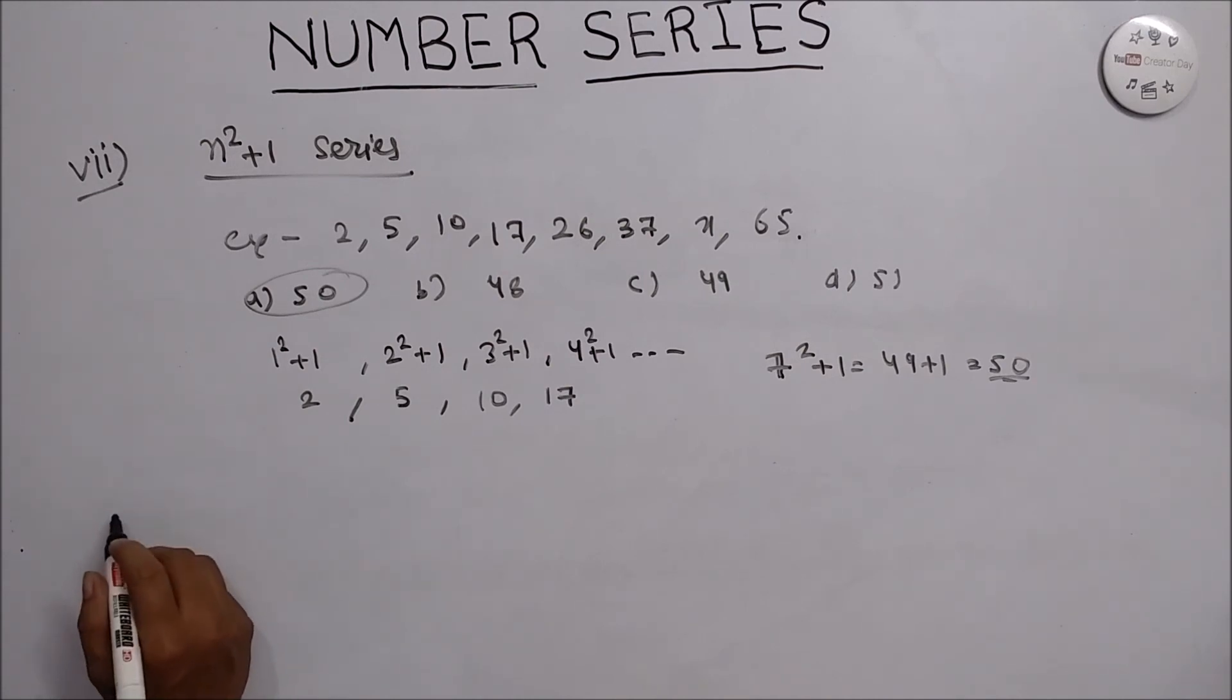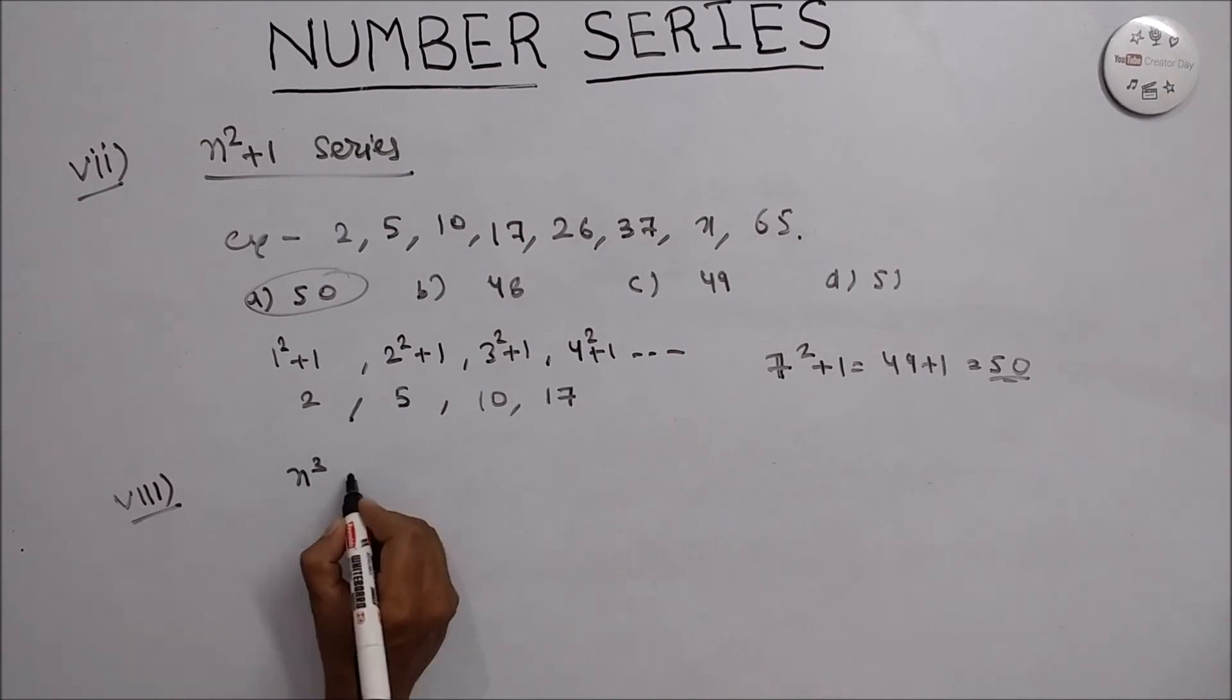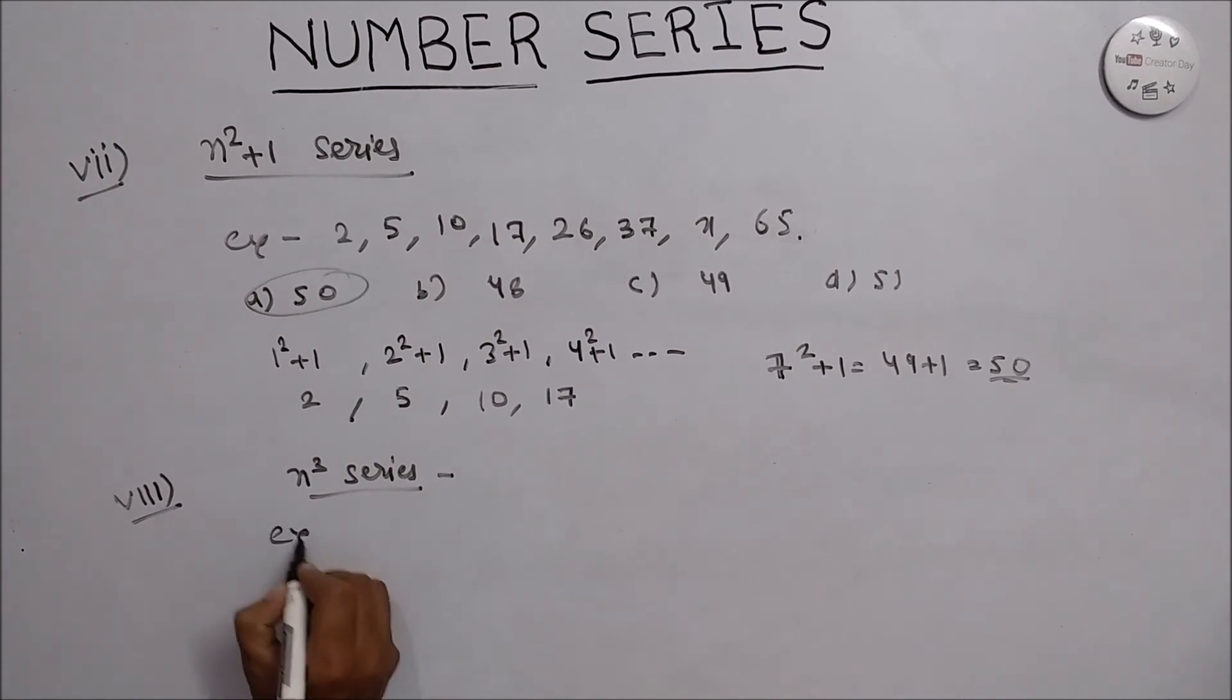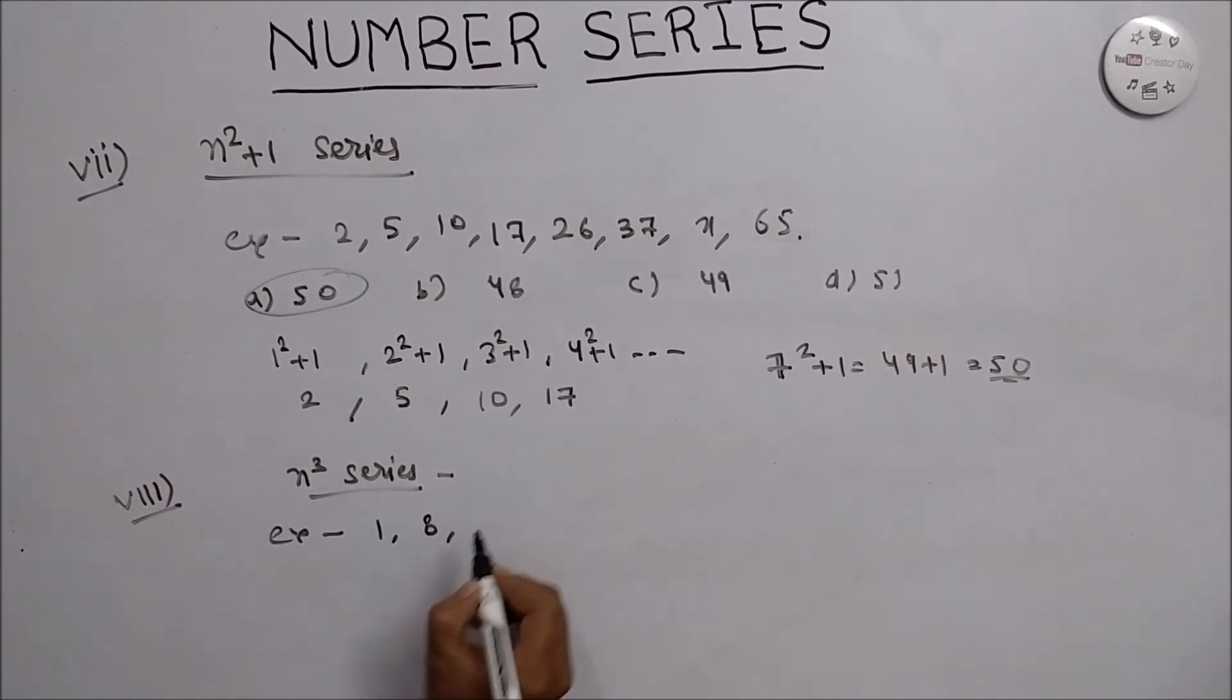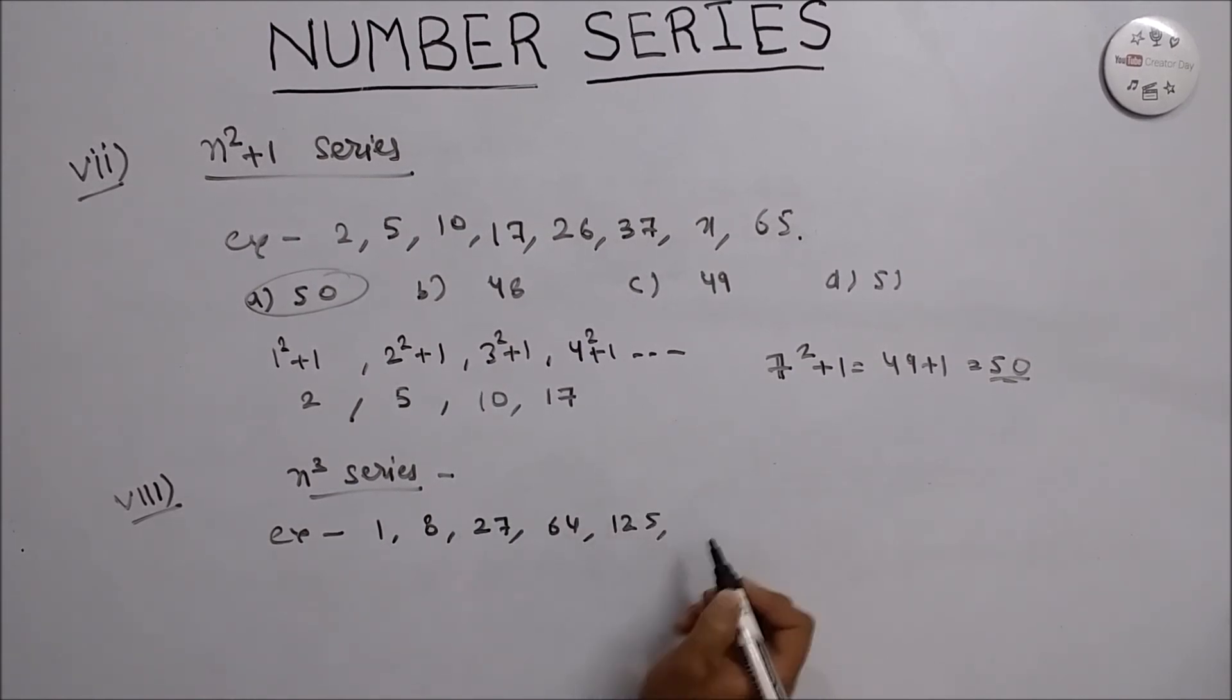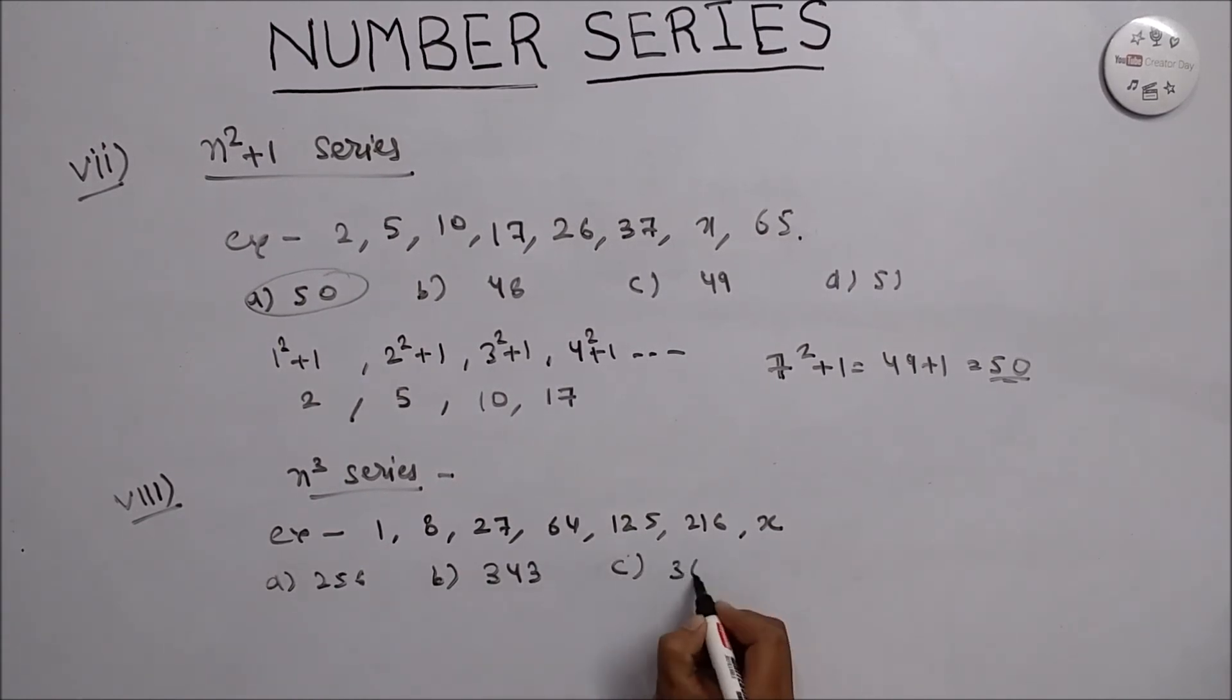Another method, or you can say another type of the series, is n cube series. Let's take an example: 1, 8, 27, 64, 125, 216, and x. Options are A is 256, B is 343, C is 365, and D is 400.